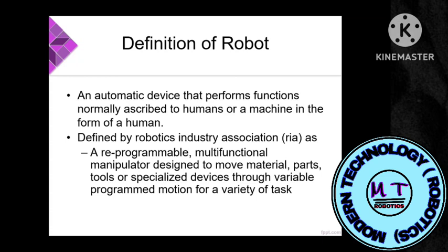So the definition of a robot is anything which is reprogrammable, multi-functional, and has manipulator design. For example, if you see a car with some motors and a controller that can be reprogrammed, it will be categorized as a robot.